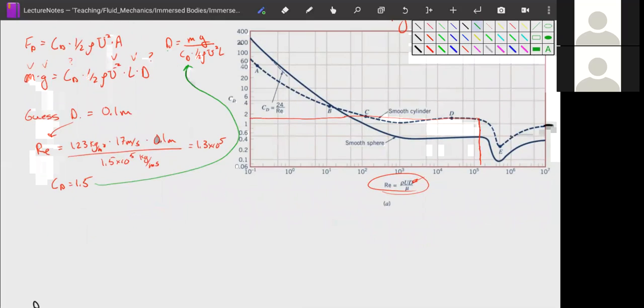And our new d, or we'll call it our guess d, is going to be equal to 0.36.